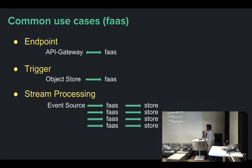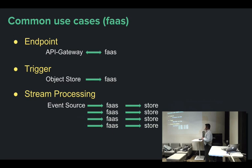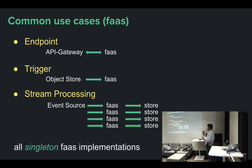Common use cases of functions as a service: it could be a simple endpoint where an API gateway gets a request, does something, and sends back an answer. It could be triggered by an event — like you upload a file and a serverless function sends an email. Or it could be used in stream processing where clickstream data from your website is manipulated before going into a data lake or S3 bucket. But these are all singleton uses — each one is used for one particular thing, not a whole system.